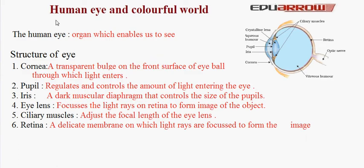The various parts of the eye are: 1. Cornea. It is a transparent bulge on the front surface of the eyeball through which light enters. This front bulging outward surface is the cornea. Most of the refraction of light takes place at the cornea.